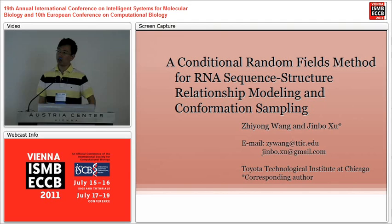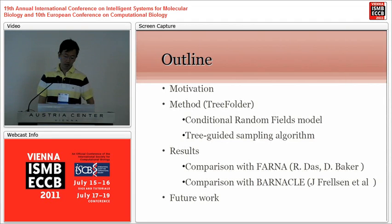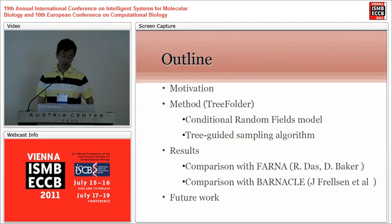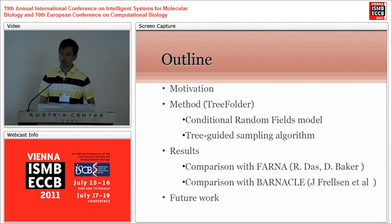Thank you organizers. Today I'm talking about our work on RNA conformation sampling. The outline covers first our motivation, then our method called Tree Folder, which consists of two parts: a conditional random field model and a tree-guided sampling algorithm for RNA conformation sampling. We compare our methods with two state-of-the-art methods, FARNA, which is part of Rosetta, and another method called Barnacle. Last, I will talk about our future work and possible improvements.